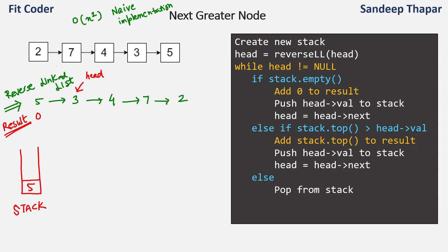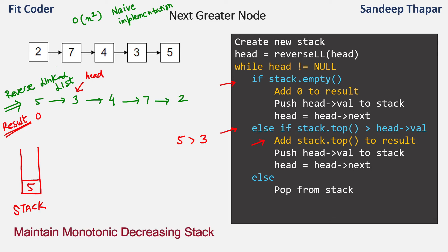In the next iteration, we check if the stack is empty — it is not. We come to the else part and compare the top of the stack with the head value. The stack top is 5, which is greater than the head value 3. So for node 3, the output is 5. We add stack top to the result — so for 3, the result is 5. Then we push value 3 onto the stack and advance head to the next node, which is 4.